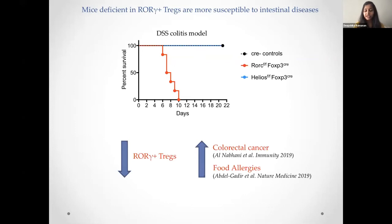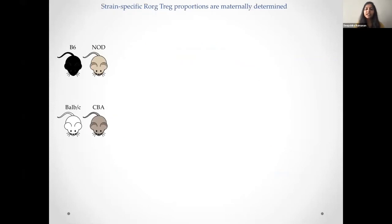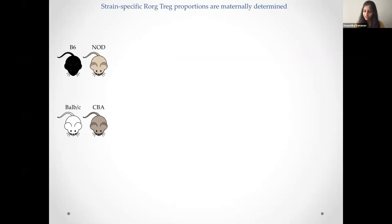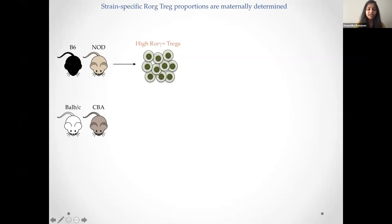While trying to further understand the functions of these cells, we came across a really cool observation: different inbred strains of mice had different proportions of these Tregs in the intestine. For example, B6 and NOD mice had high RORγ Tregs, while BALB/c and CBA strains had low RORγ Tregs.